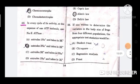Question number 53: In every cycle of its activity, at the expense of one ATP molecule, one sodium potassium ATPase? Option is B, extrudes three sodium and takes in two potassium.